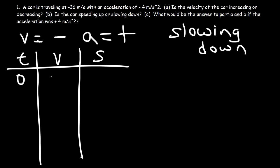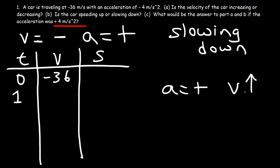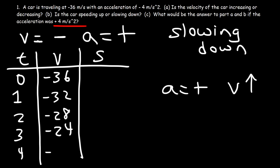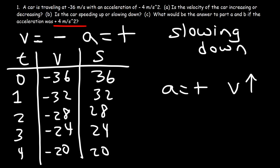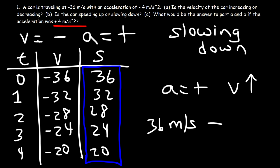Let's make a table to confirm. At t equals 0, the velocity is negative 36. If the acceleration is positive 4, what will the velocity be one second later? If acceleration is positive, that means velocity is increasing, so it's increasing by 4. If you add 4 to negative 36, you get negative 32. So every second, we add 4 to the previous value. The speed is the absolute value of velocity, so we have positive values. Looking at these values, going from 36 to 20 — if you're moving at 36 meters per second and now your speed is 20, you're slowing down.